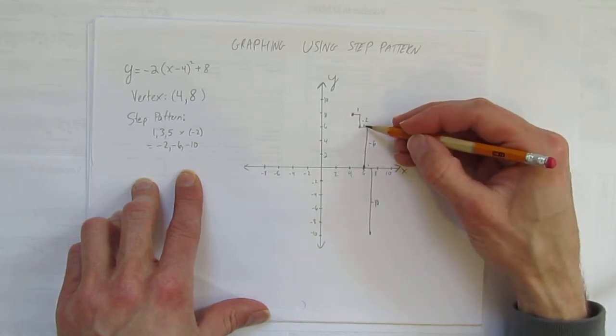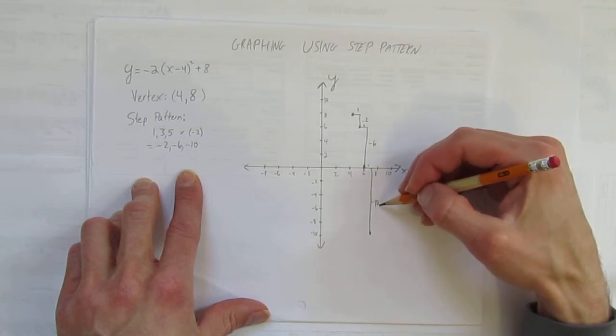Over 1, down negative 2. Over 1, down negative 6. Over 1, down negative 10.